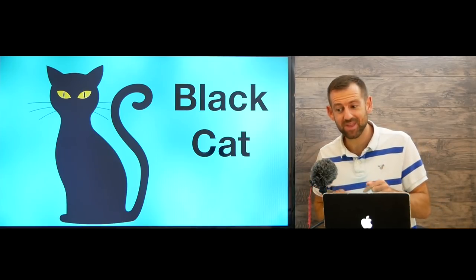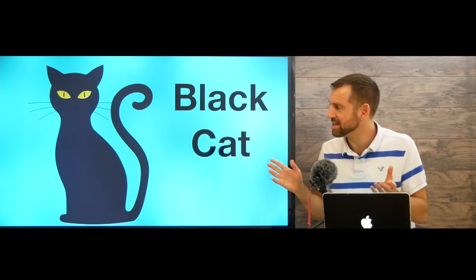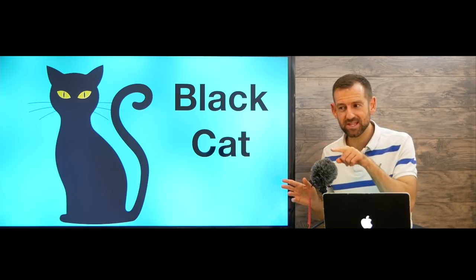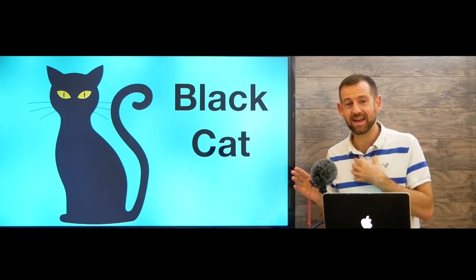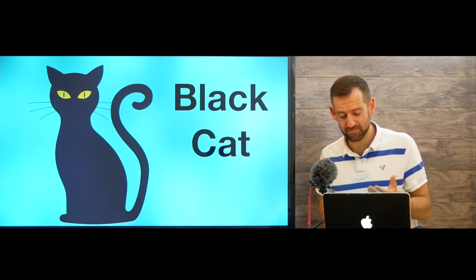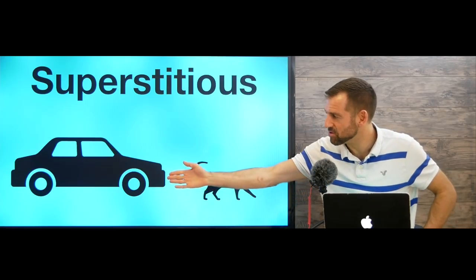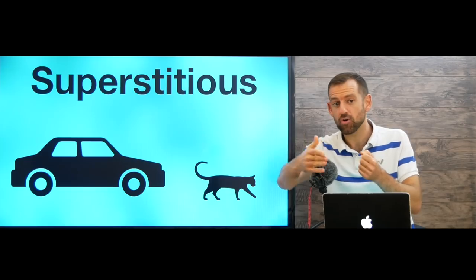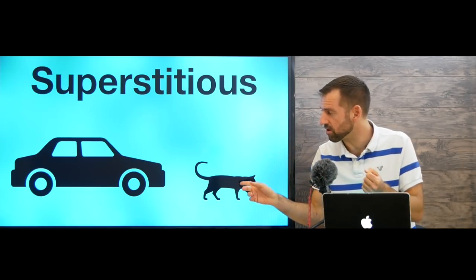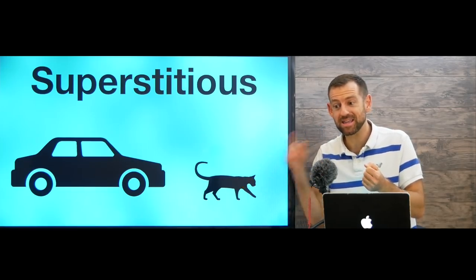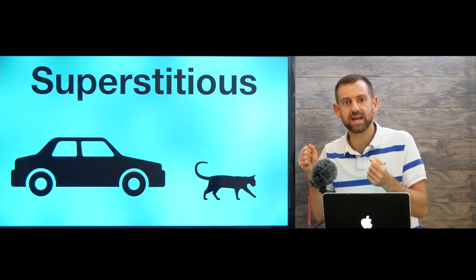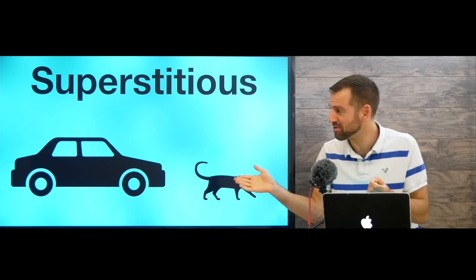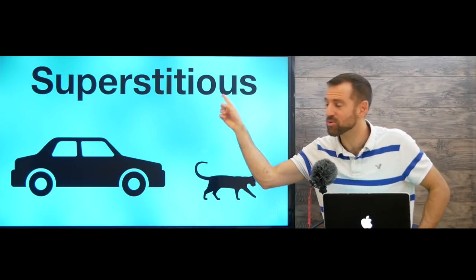In our culture, some people believe that a black cat means bad luck. So if you see a black cat, that might mean that you have bad luck. For example, if you are driving down the road and a black cat runs across the road in front of you, that might be bad luck. Then you're worried — am I going to get into an accident? Some people are very superstitious.